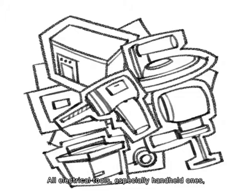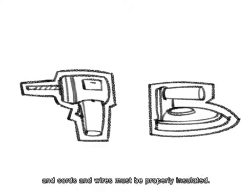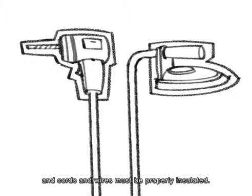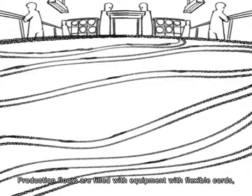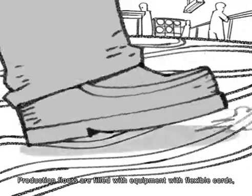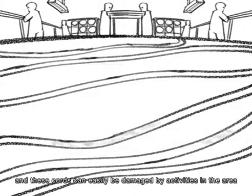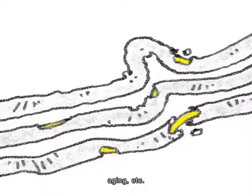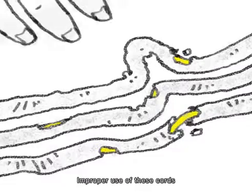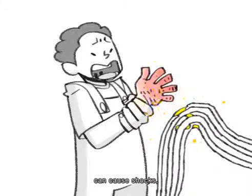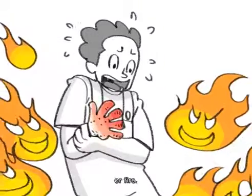All electrical tools, especially handheld ones, and cords and wires must be properly insulated. Production floors are filled with equipment with flexible cords, and these cords can easily be damaged by activities in the area, such as folding, aging, etc. Improper use of these cords can cause shocks, burns or fire.